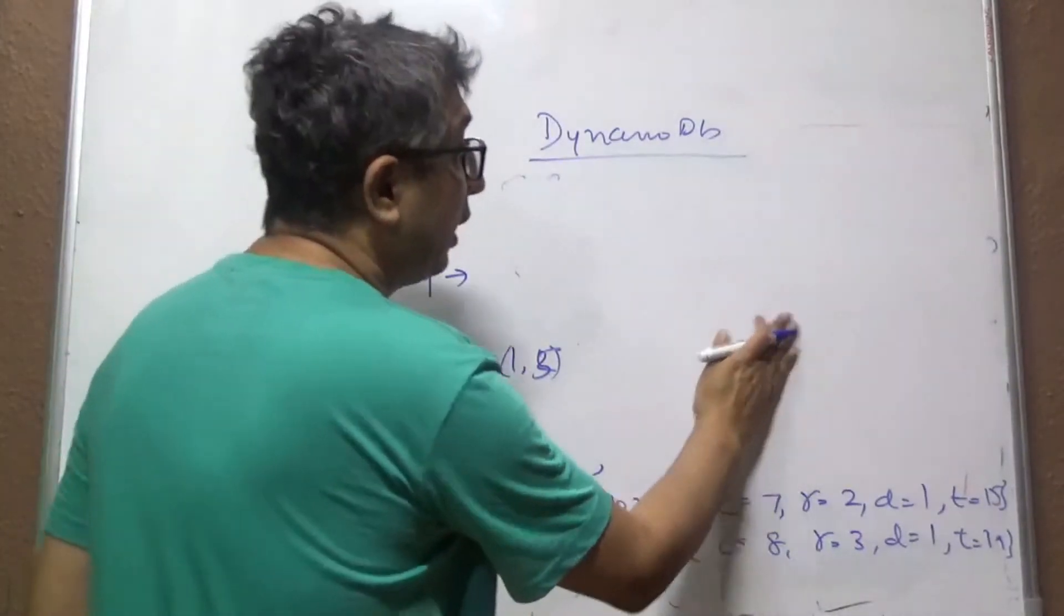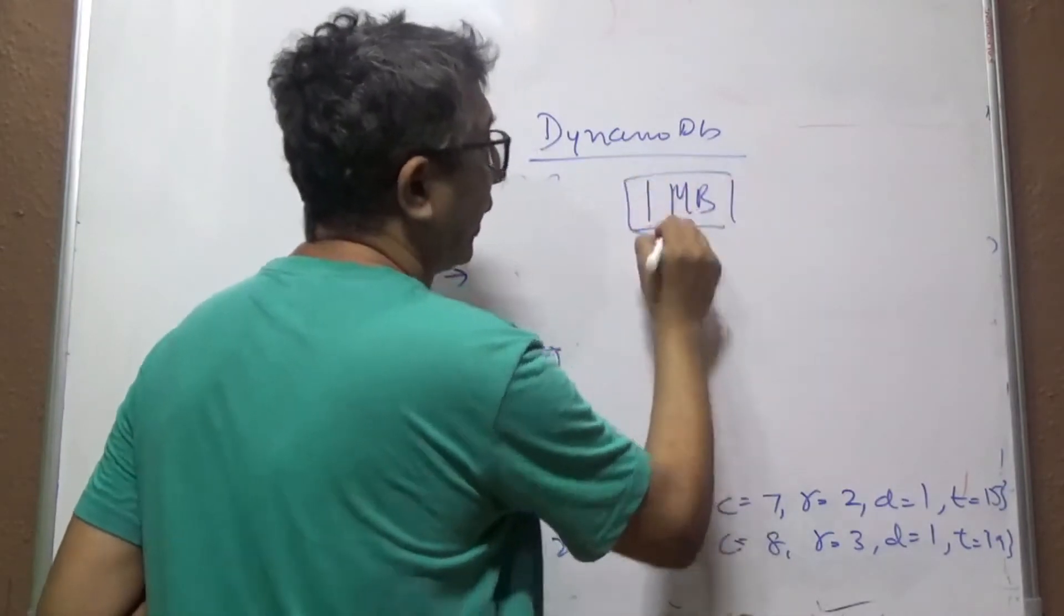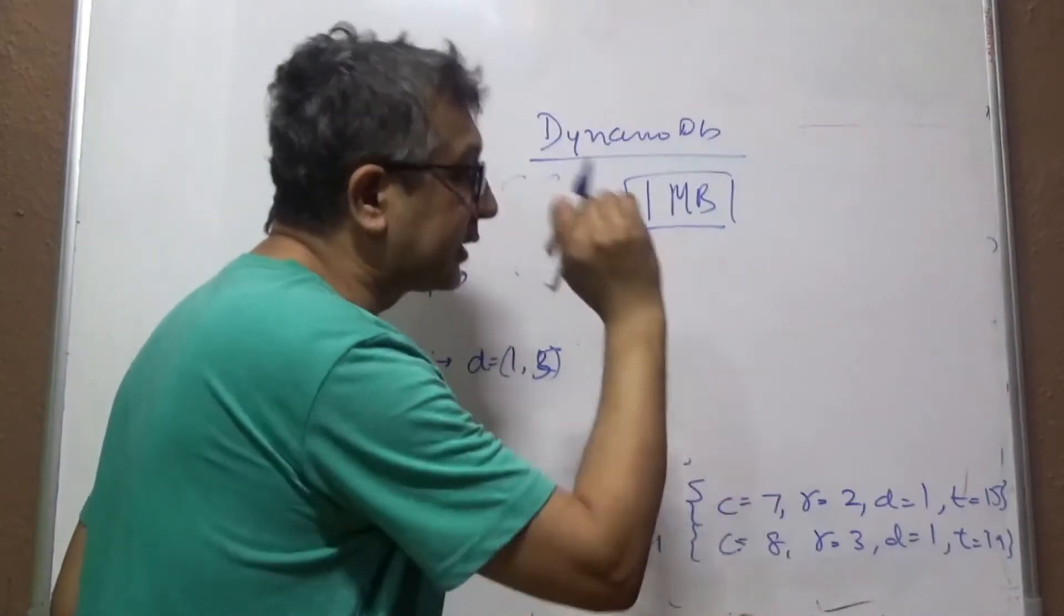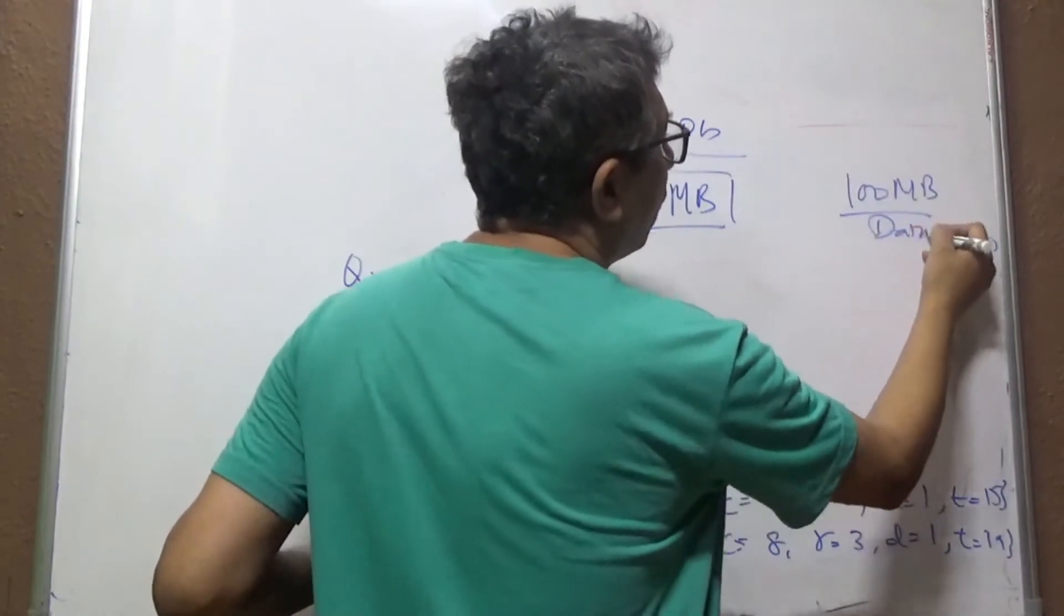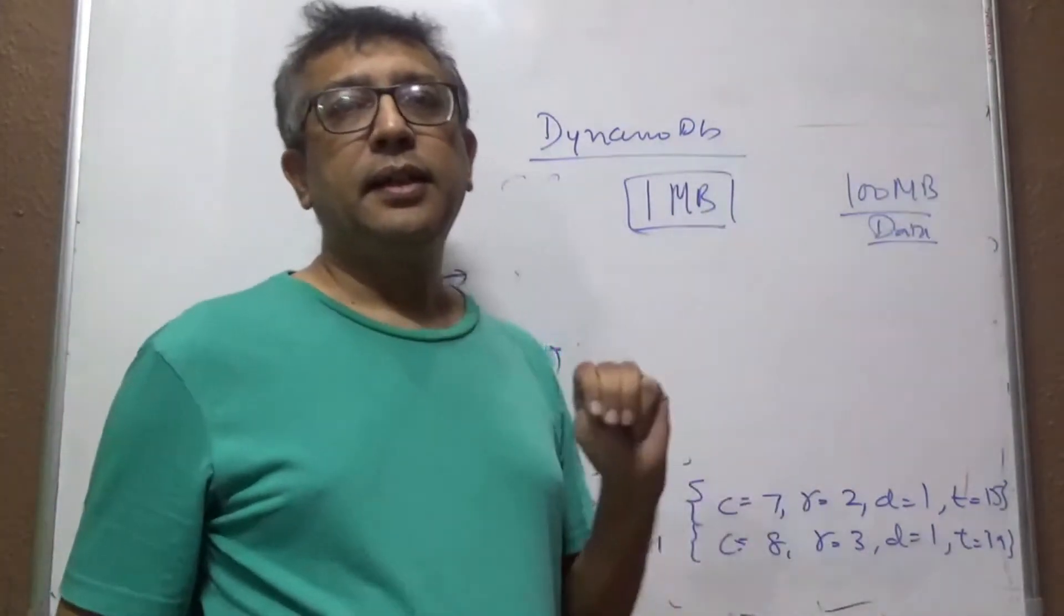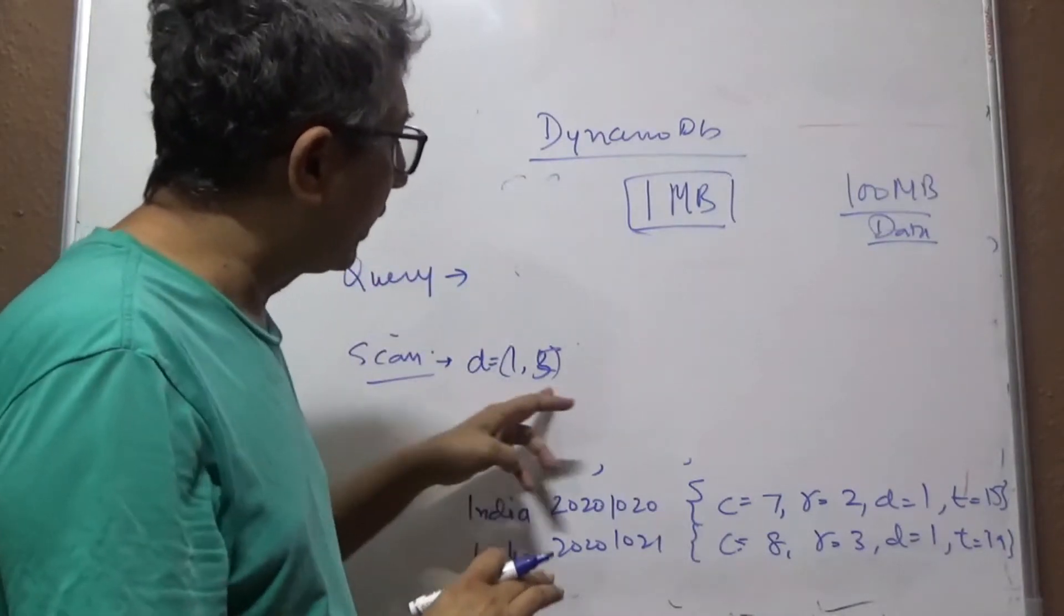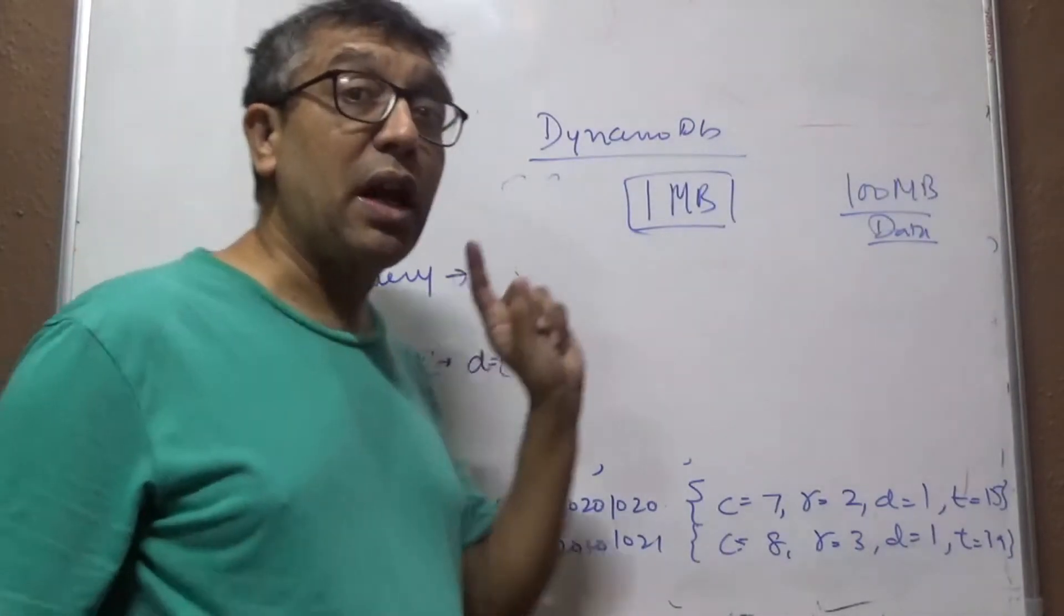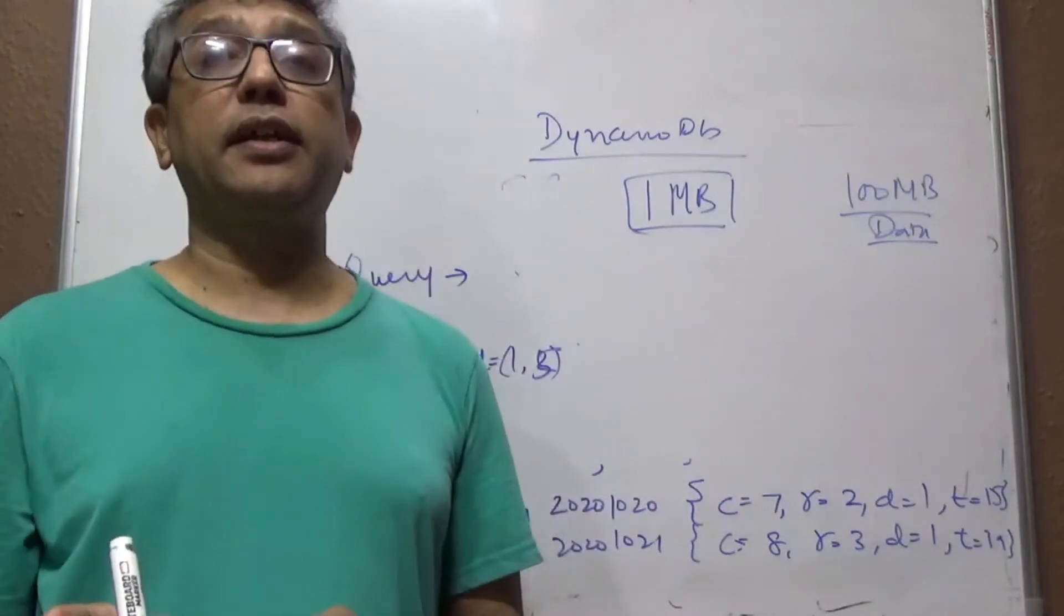Then there is another more interesting thing. DynamoDB for any scan that happens can only return 1 MB of data. What it means is that let's suppose you have 100 MB of data for certain data points that you are interested in. For example, let's say give me all the country's data where the death is between 1 and 5. What it will potentially do is it has to now go and look into each of the data points that is in your database.